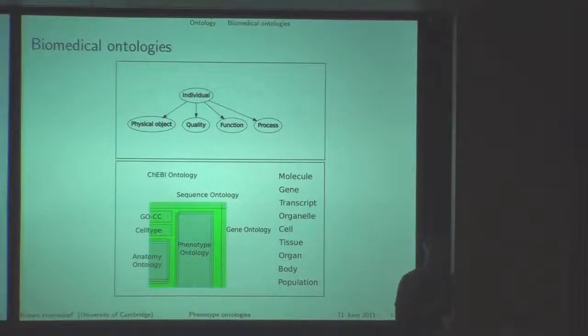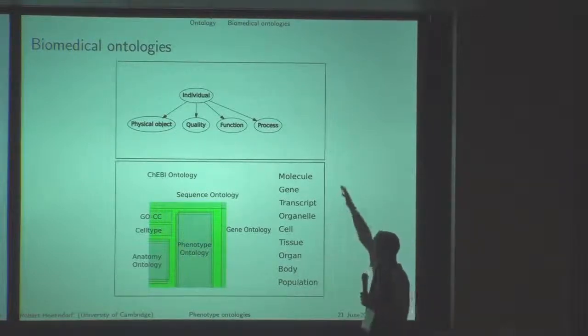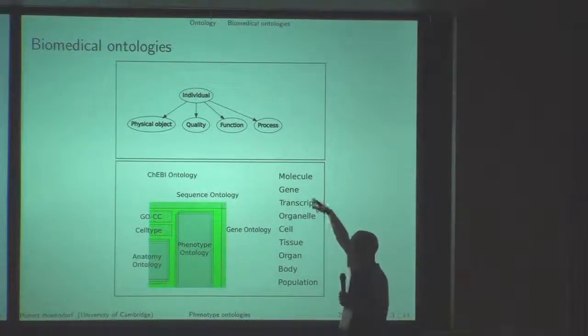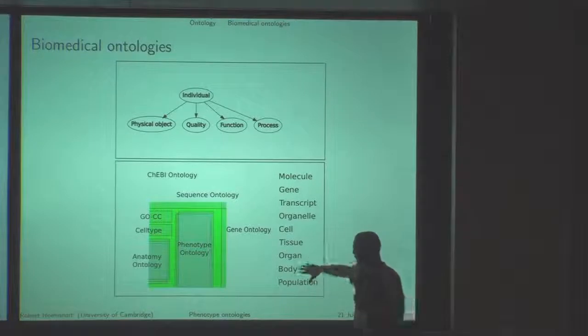Ontologies are used to integrate aspects of data and characterize the meaning of some aspect of them, and they can integrate data in at least three dimensions. The first dimension is across domains and levels of granularity, from a molecular scale with different ontologies pertaining to different molecules, genes, and so on, all the way up to organs, bodies, populations.